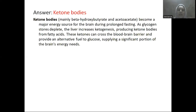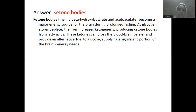Ketone bodies — beta-hydroxybutyrate and acetoacetate — provide energy to the brain during prolonged fasting. Glycogen stores are depleted; glycogen is the storage form of carbohydrate. Ketone bodies serve as an alternative fuel to glucose and produce energy to the brain because they cross the blood-brain barrier. So ketone bodies are the answer for prolonged fasting.